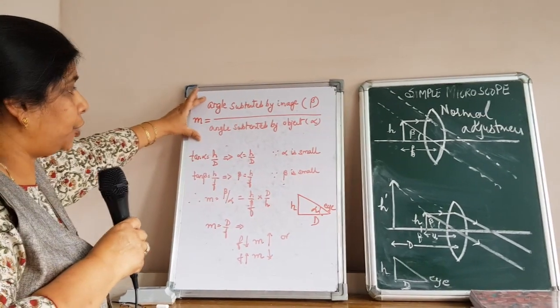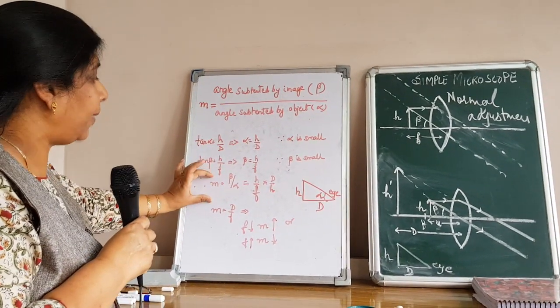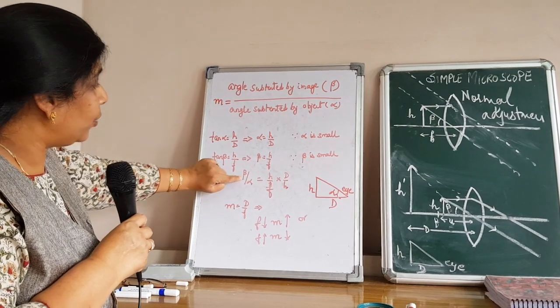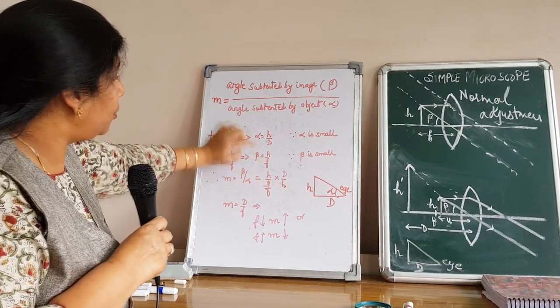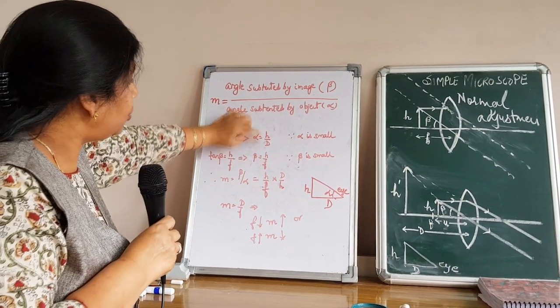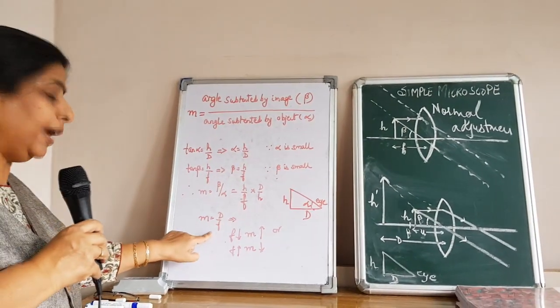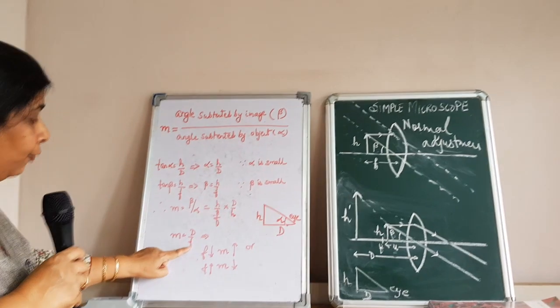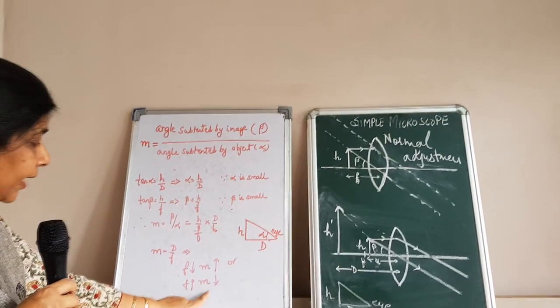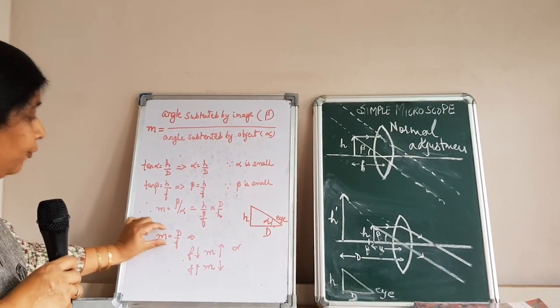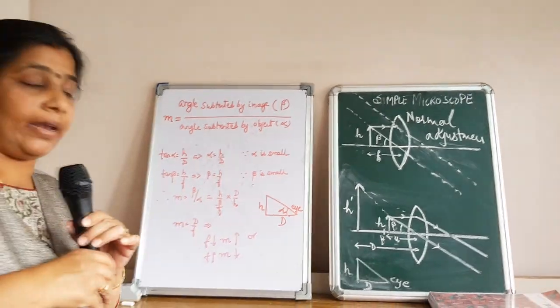From the definition of magnification, when I substitute the parameters, I get M equal to beta by alpha which is equal to H upon F into D by H. The value of magnification comes out to be D by F. More will be the focal length, less will be the magnification. Less will be the focal length, more will be the magnification.